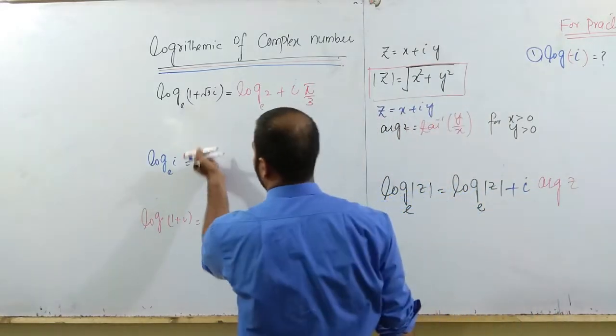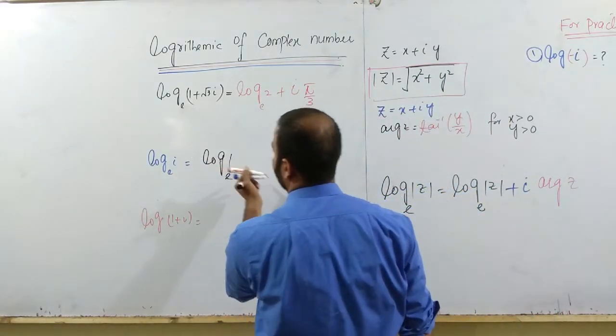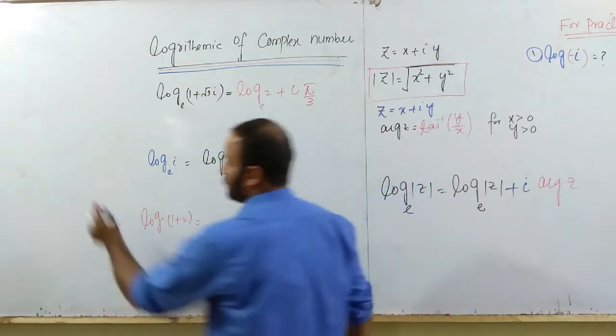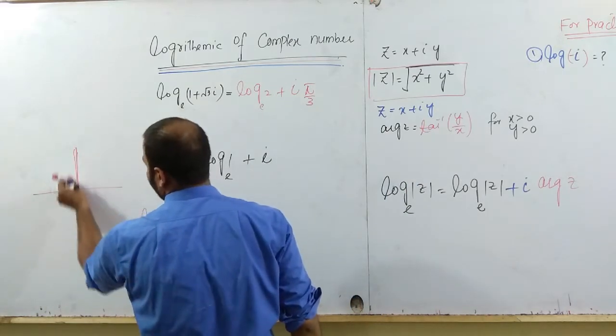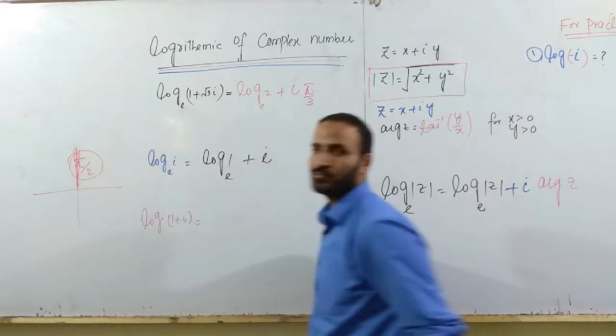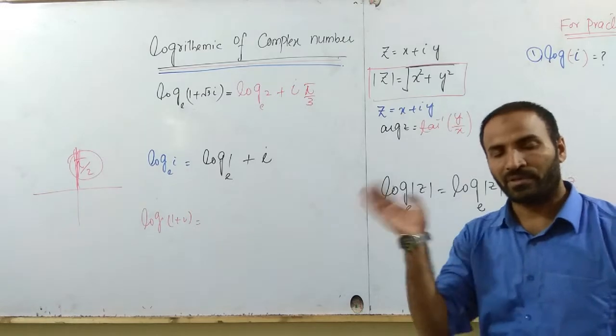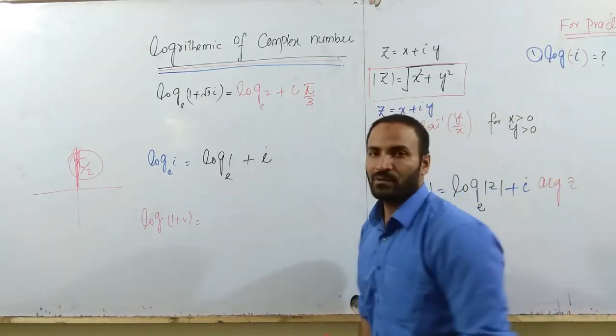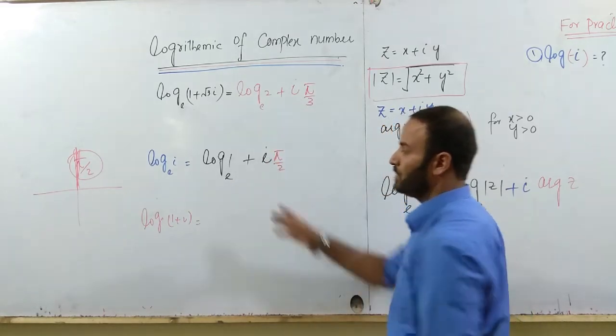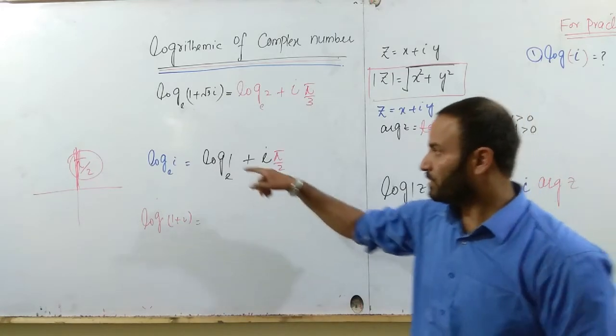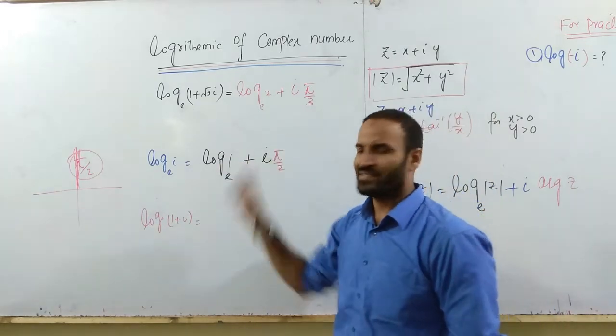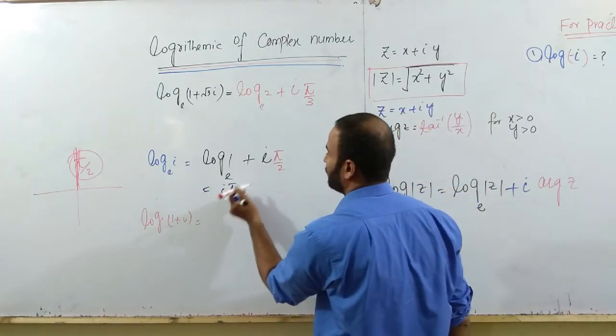So you will get log 1 plus iota. What is the argument of iota? I told you all the numbers which lie on the positive y-axis, the argument of those numbers is pi by 2. This is a short technique from my previous section on the topic argument or amplitude. So here you just put pi by 2. This is your required answer. But you already know log of 1 is always 0 for any base, so the answer is iota pi by 2.